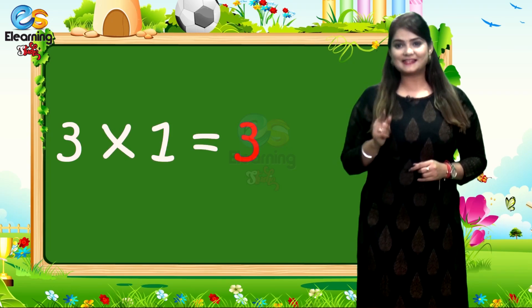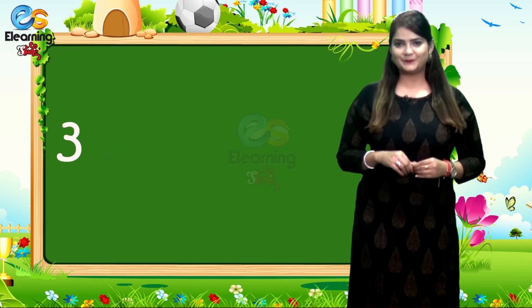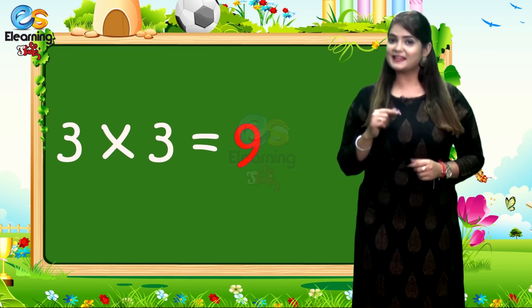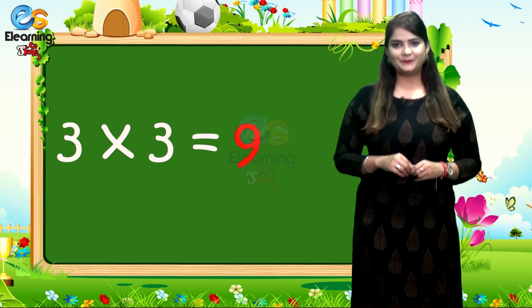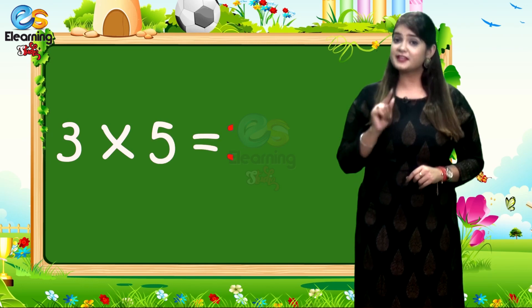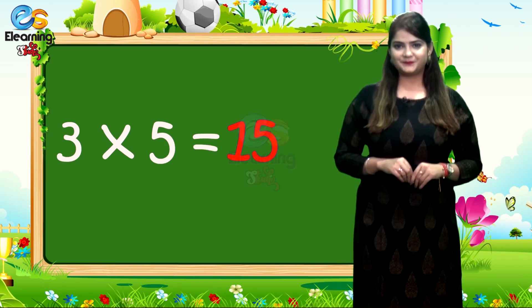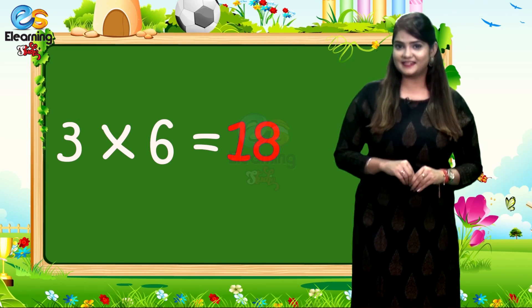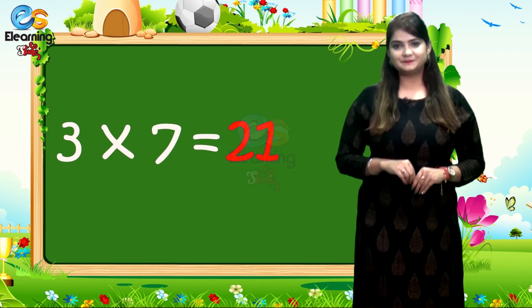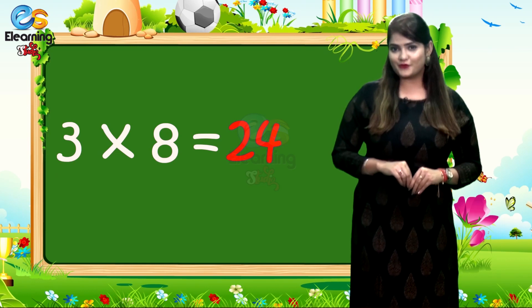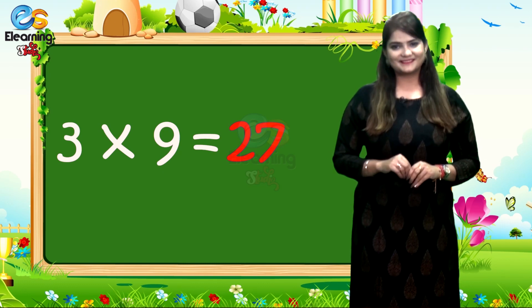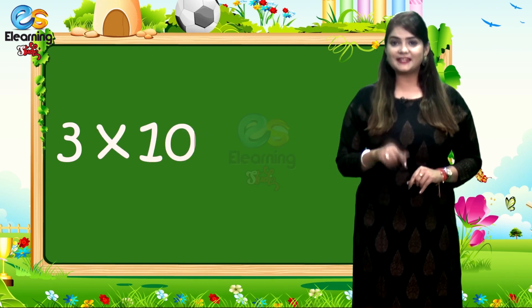3 1s are 3. 3 2s are 6. 3 3s are 9. 3 4s are 12. 3 5s are 15. 3 6s are 18. 3 7s are 21. 3 8s are 24. 3 9s are 27. 3 10s are 30.